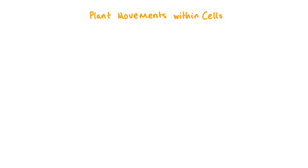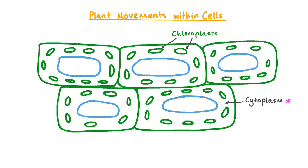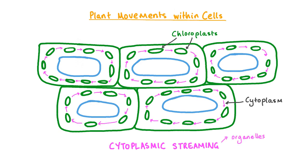Now let's take a closer look at movement at the cellular level. This is a drawing of what some typical plant cells in the leaf of an aquatic plant might look like under a high-powered microscope. Subcellular structures are visible, such as chloroplasts, the cytoplasm — a fluid in which organelles like chloroplasts are suspended — and the vacuole. A key characteristic of the cytoplasm is that it is in a constant rotational flow in one direction within the cell. This is called cytoplasmic streaming, and it moves organelles and other subcellular structures, including nutrients and metabolites, within the cells of multicellular organisms which cannot move them by simple diffusion.